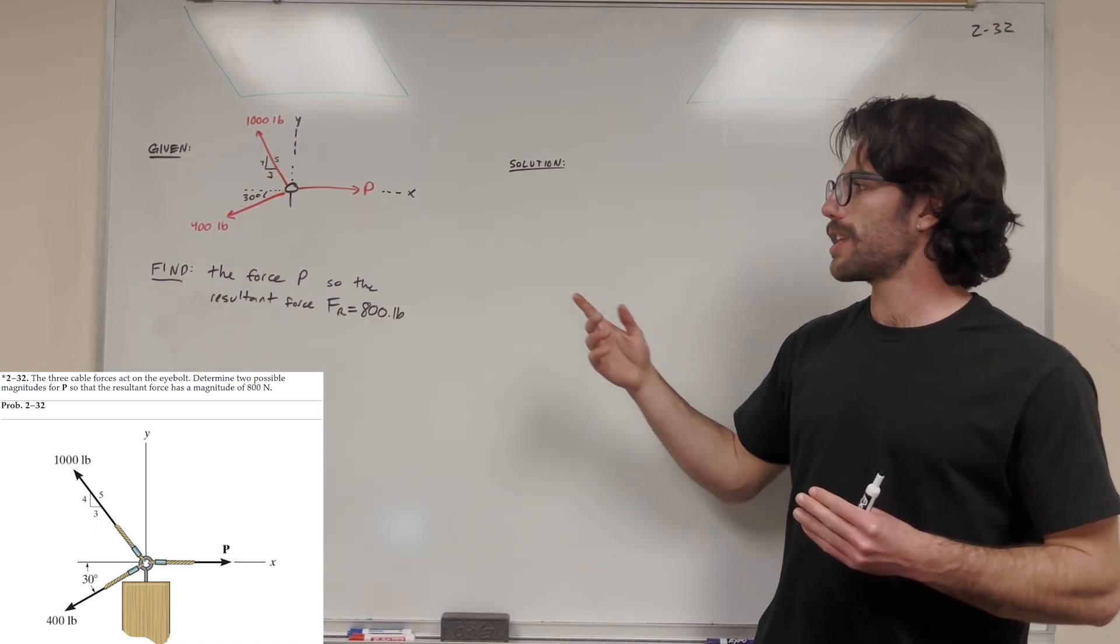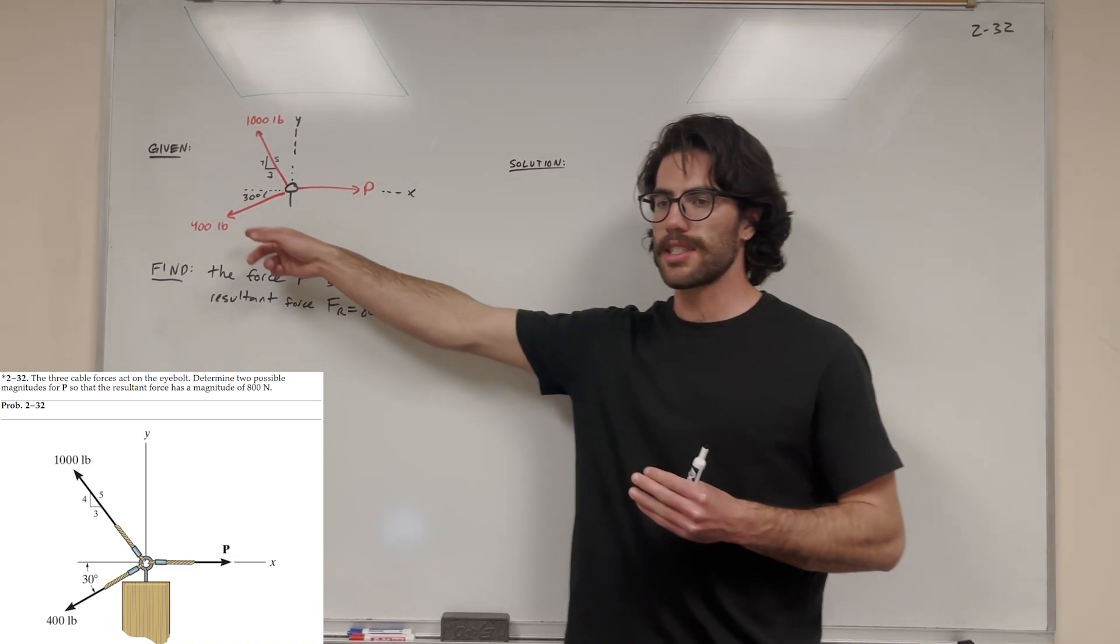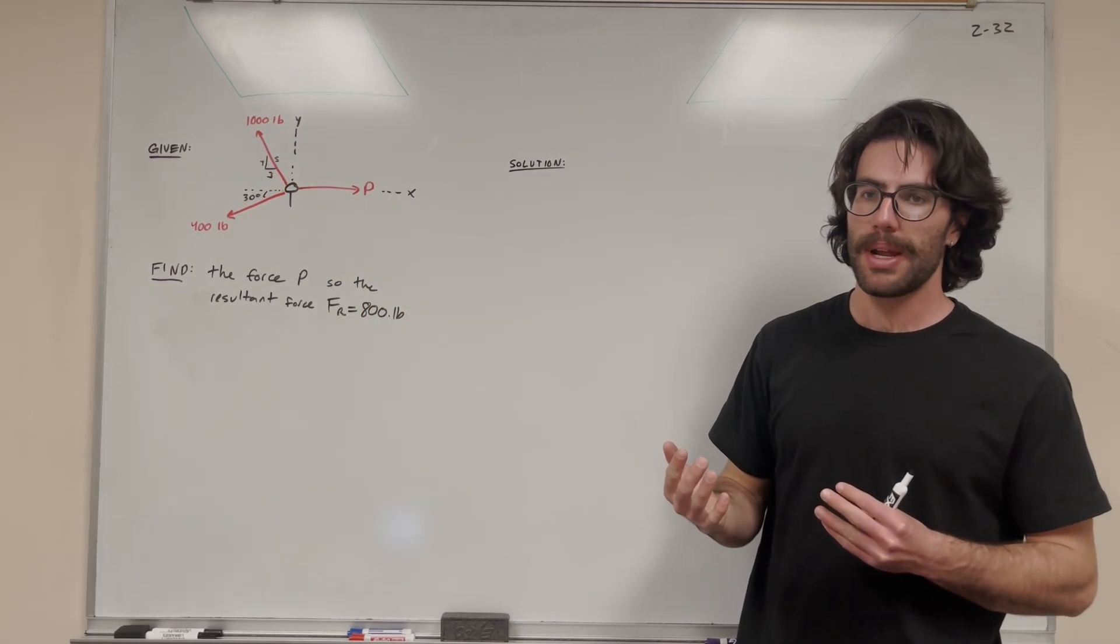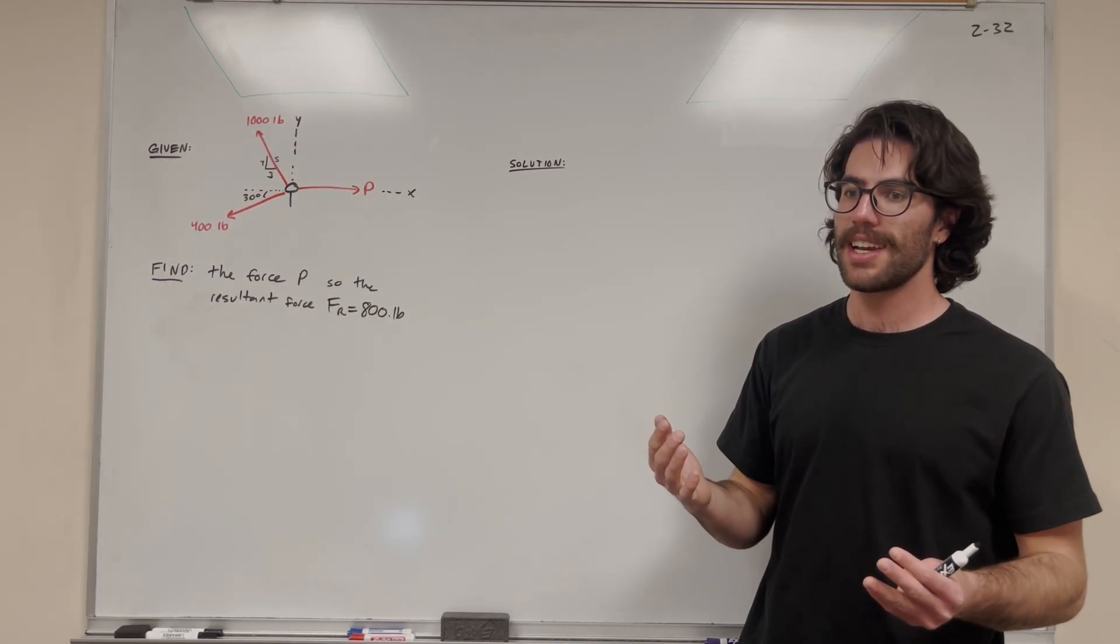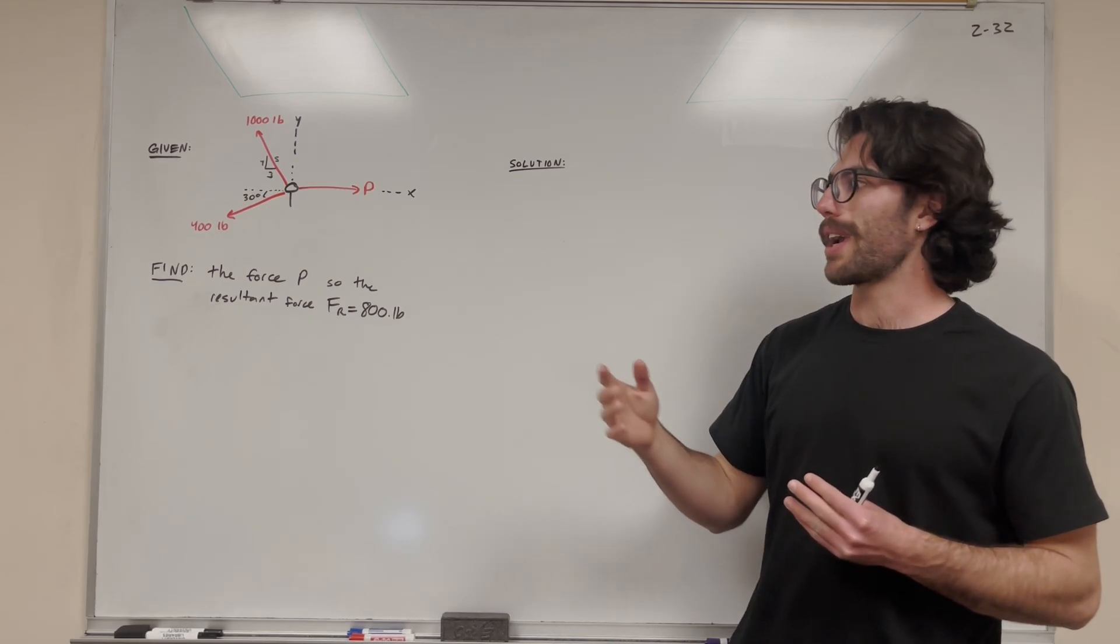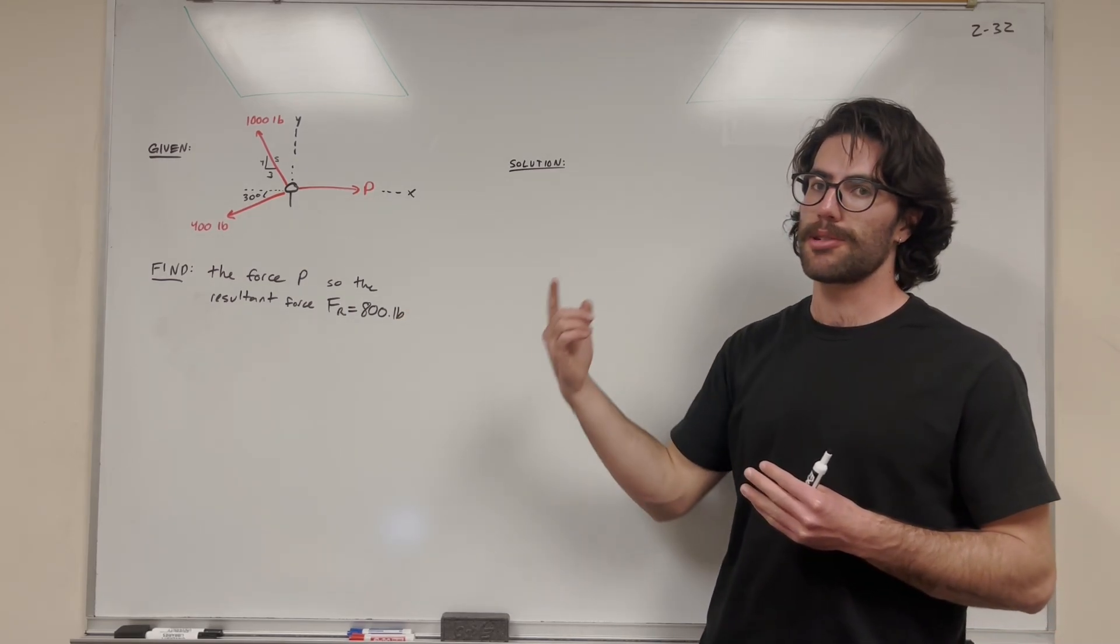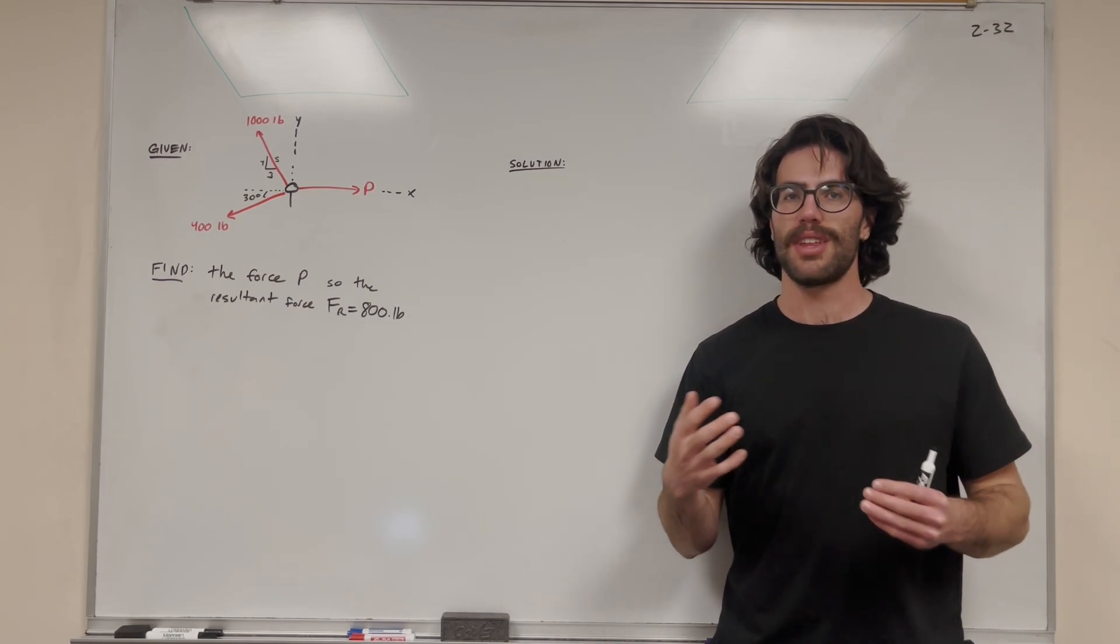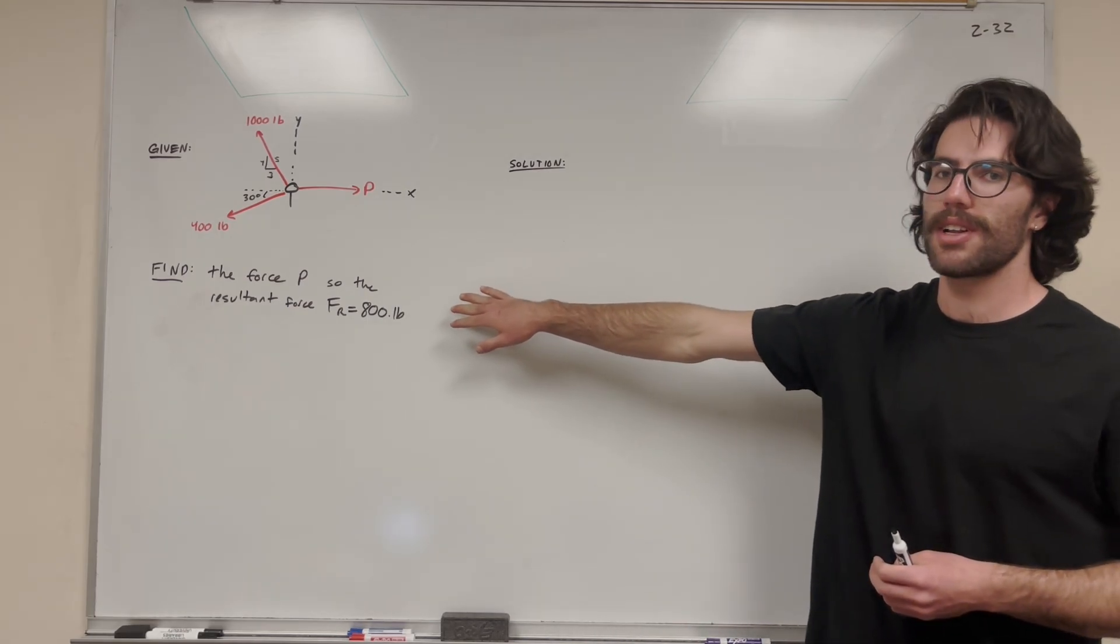Really quickly, in the book it says 800 newtons here, but everything else is given in pounds. So I went ahead and changed this to 800 pounds. I'm assuming the book made a mistake. Maybe it didn't, but you can solve this by converting 800 newtons to pounds first and solving it the same way. But I'm going to solve it with 800 pounds.